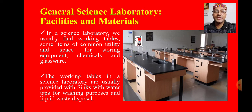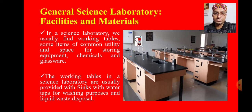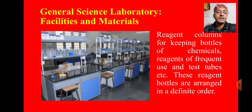Now let us see what the general science laboratory facilities and materials are. In a science laboratory, we usually find working tables, items of common utility, and space for storing equipment and chemicals. The working tables are usually provided with sinks with water taps for washing purposes and liquid waste disposal. There are also reagent columns for keeping bottles of chemicals, reagents of frequent use, and test tubes, arranged in a definite order.